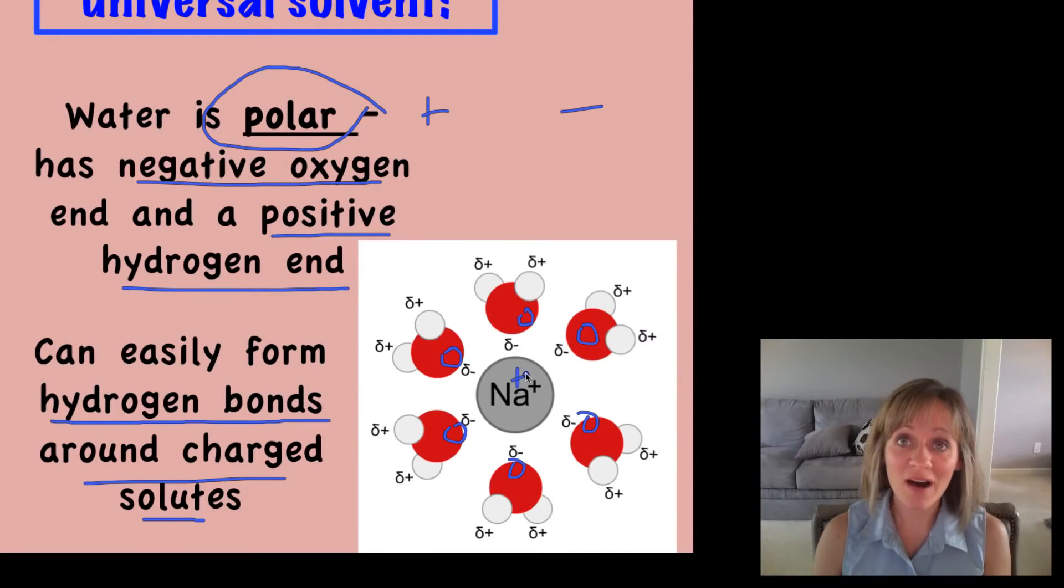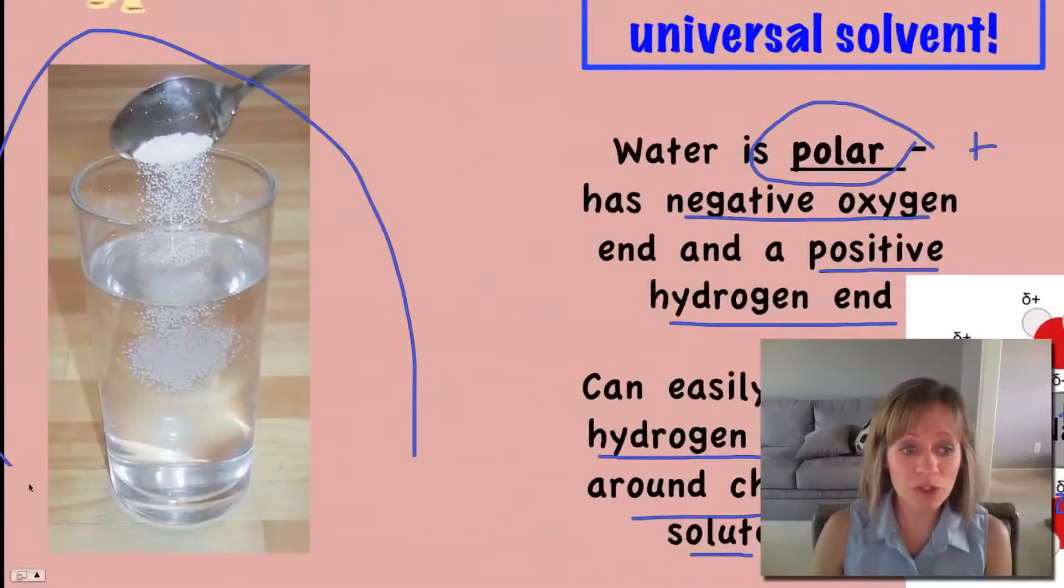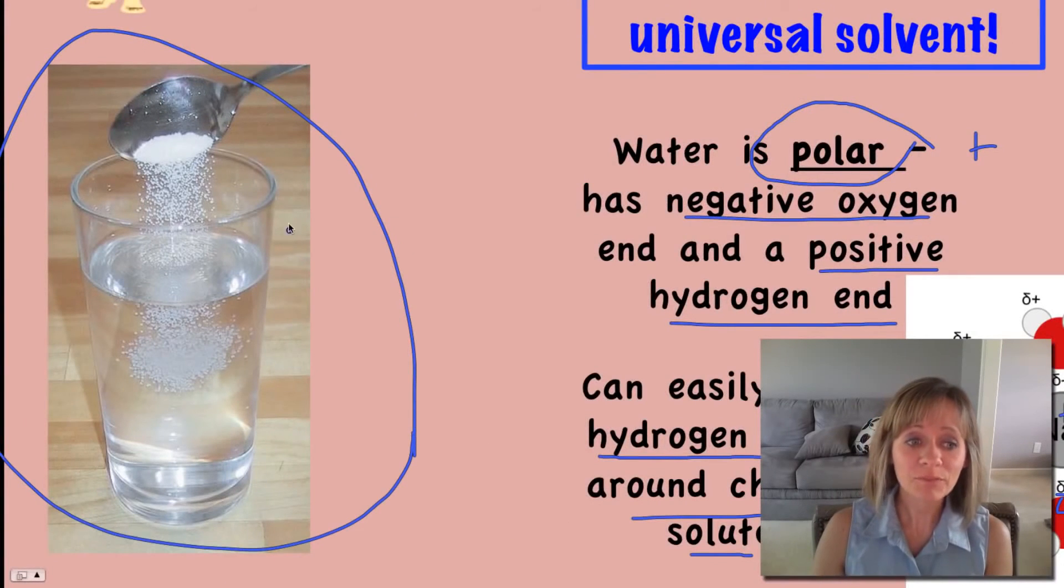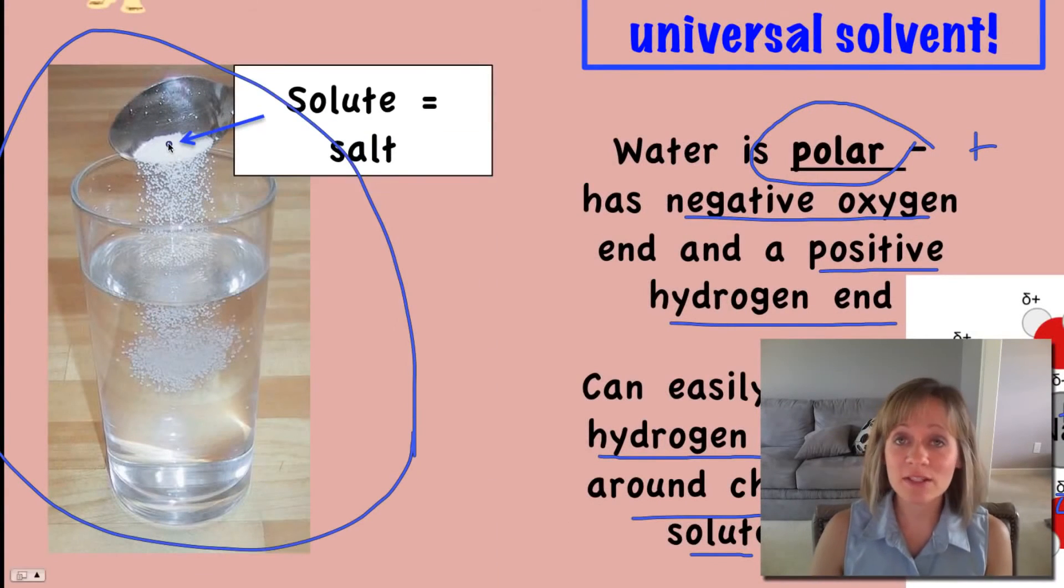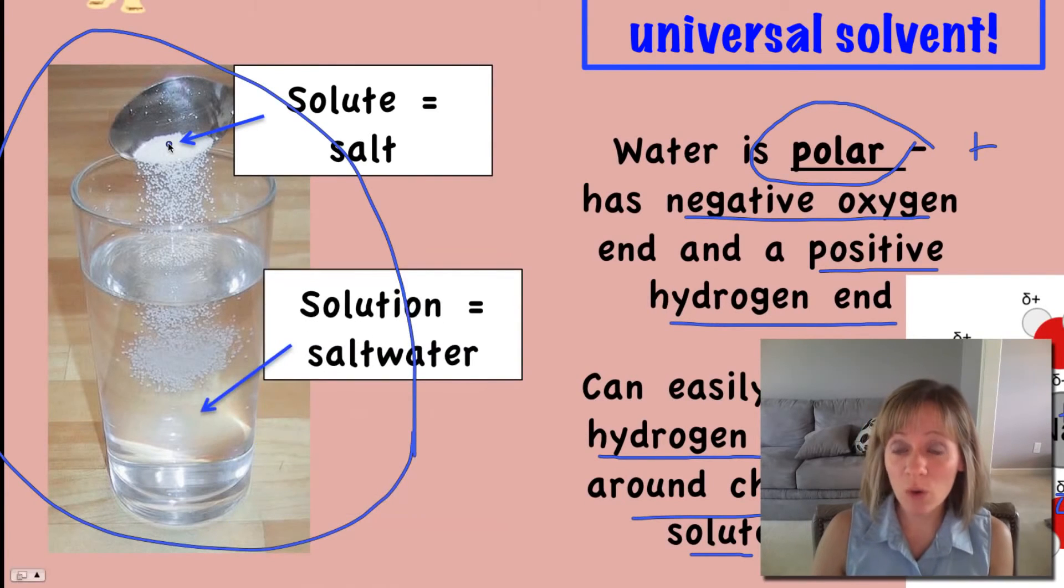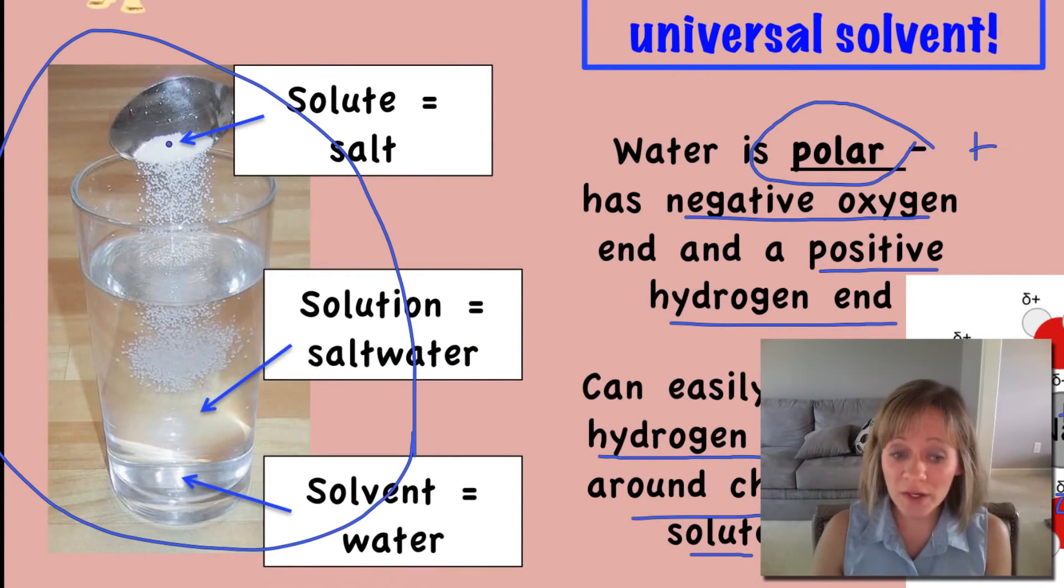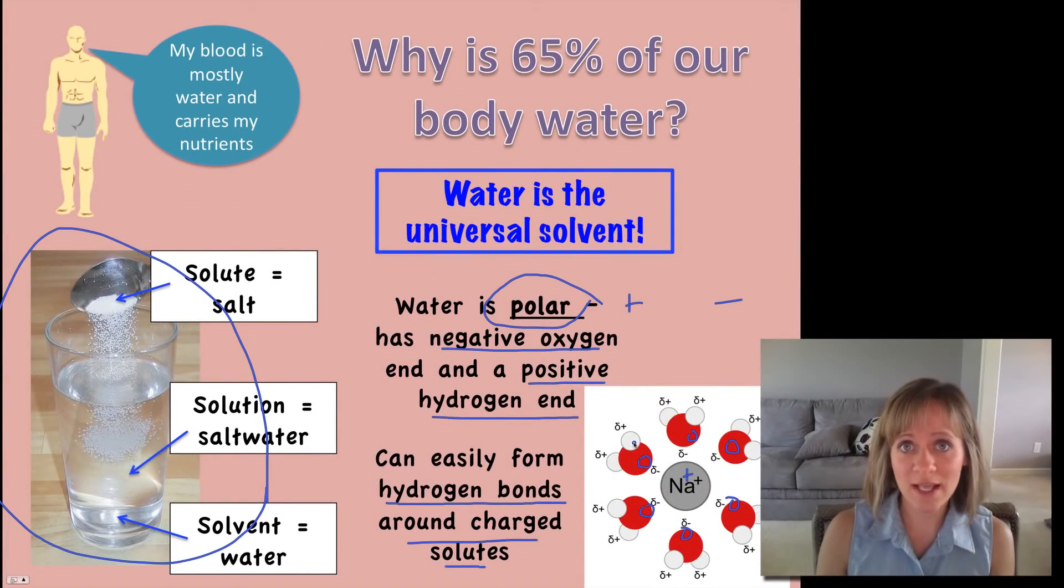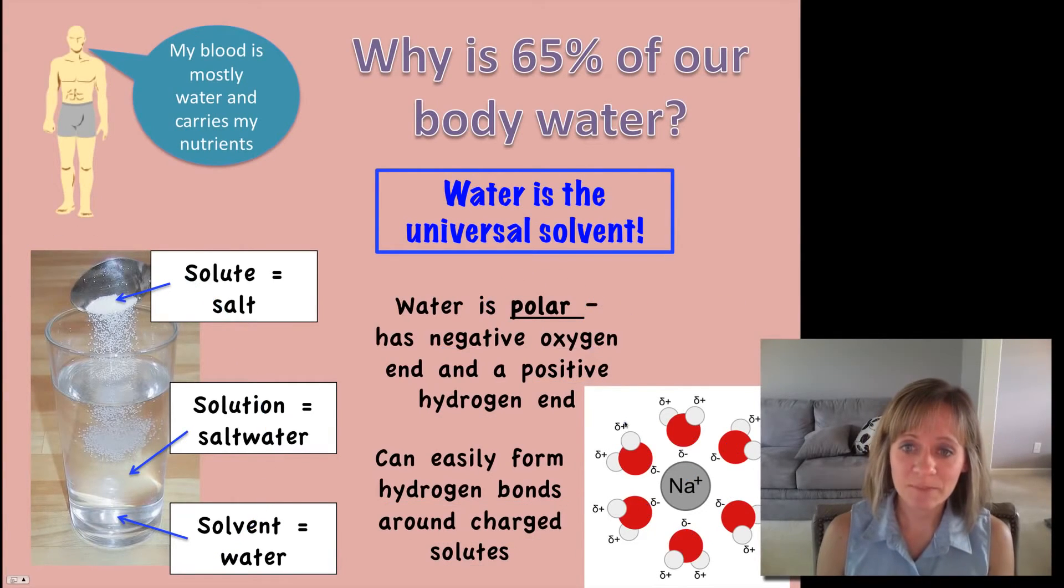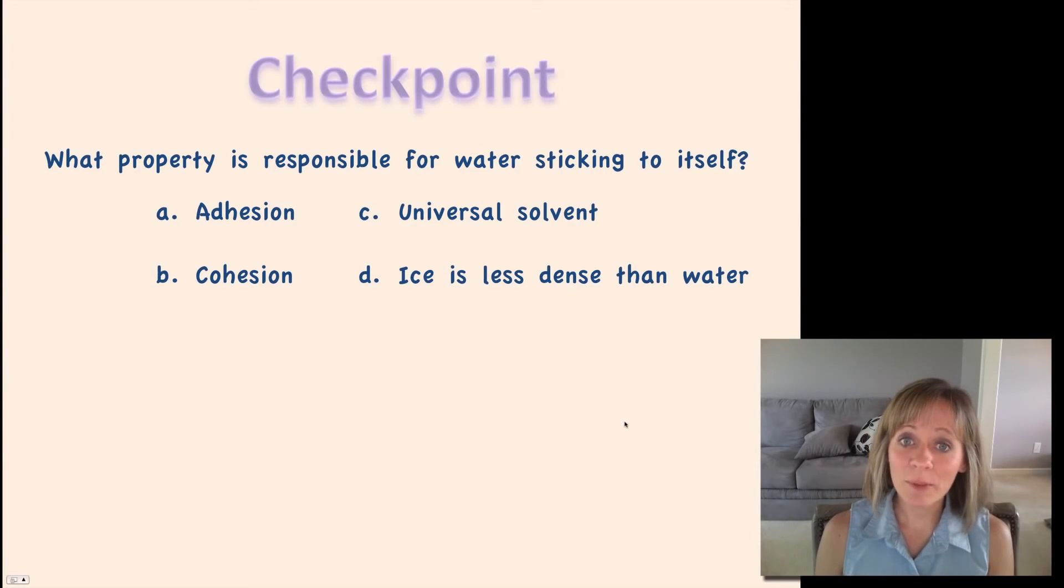For example, in salt water or sugar water, the solute is the salt and that's a charged particle, the solution is the salt water that's made, and the solvent is water. So water is polar and it's dissolving those charged particles just like you see in that figure. Here's your checkpoint and you can just click right on the answer.